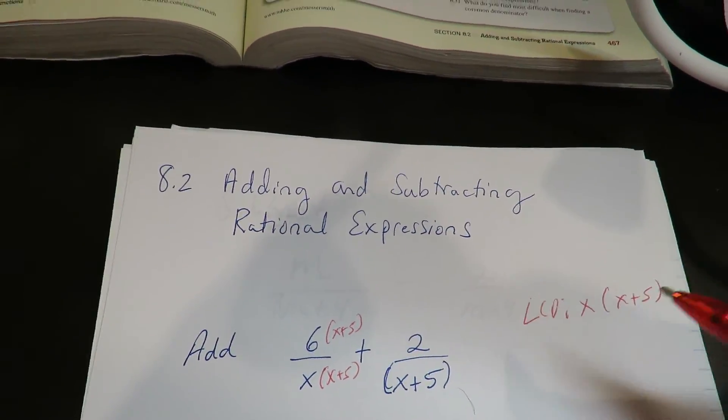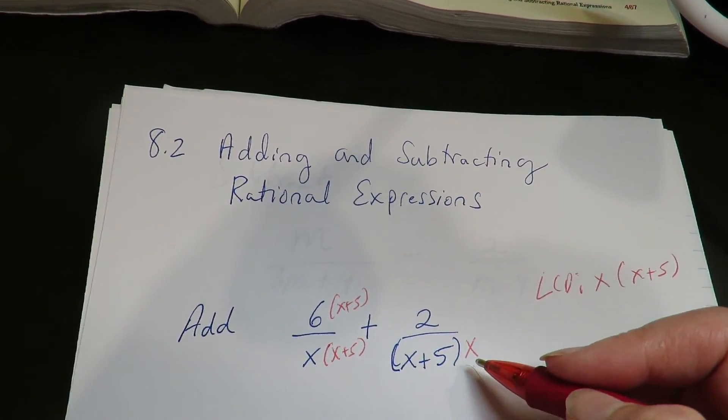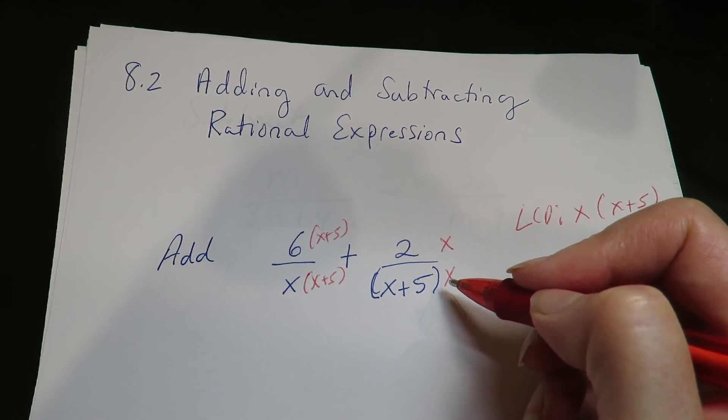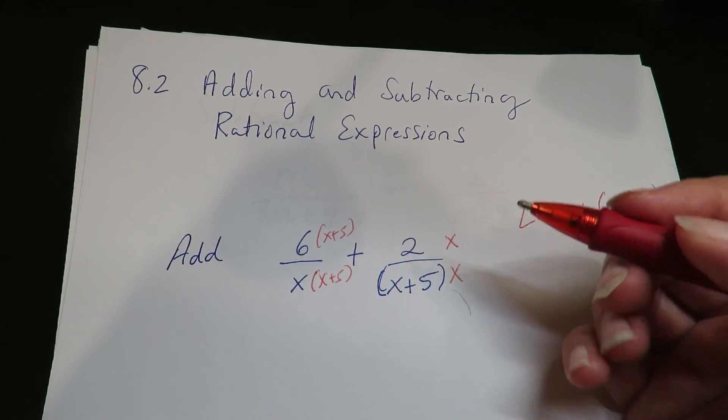Over here, this is missing an X from the LCD. So whatever you give to the bottom, you have to give to the top. So it's the denominator that determines what goes to both sides.